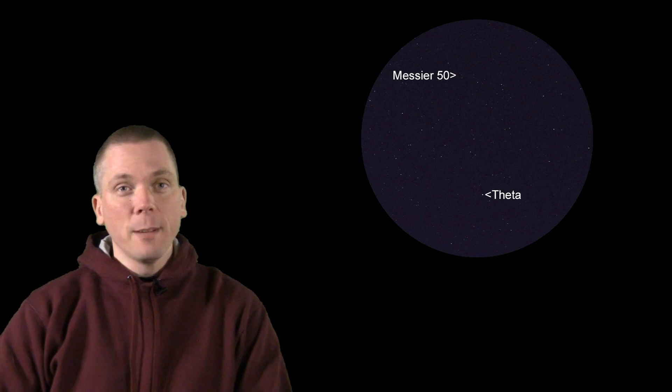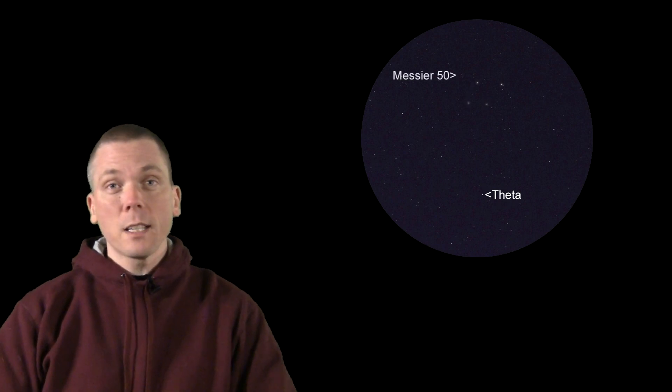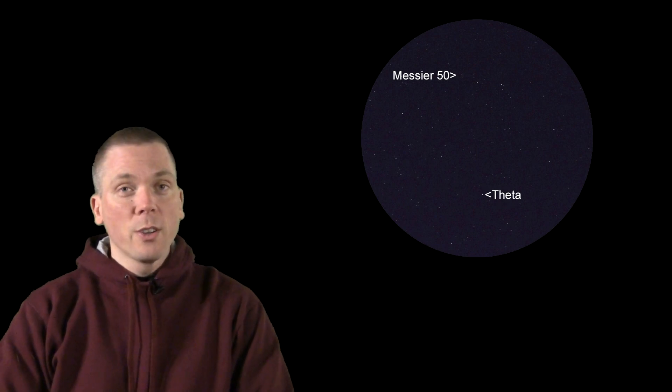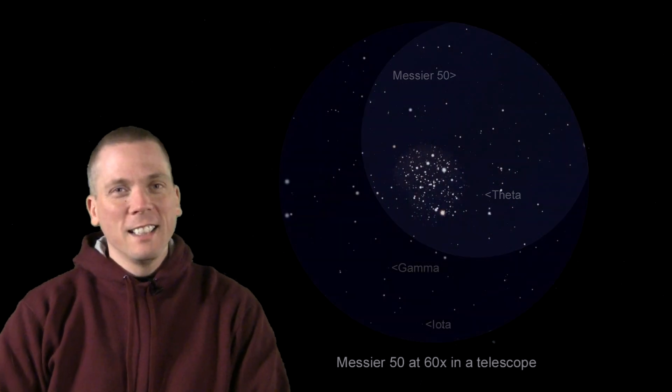That haze is the open cluster Messier 50. At 16 arc minutes of angular diameter, it can handle medium magnification in many telescopes. It is near a trapezoid shape of 7th magnitude stars. The cluster resides some 3,000 light years from us, and is approximately 20 light years across, containing around 200 or so stars, some as bright as 8th and 9th magnitude, which means a telescope is likely needed to see it.